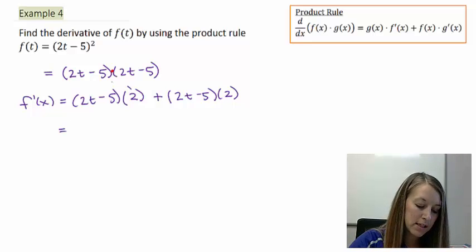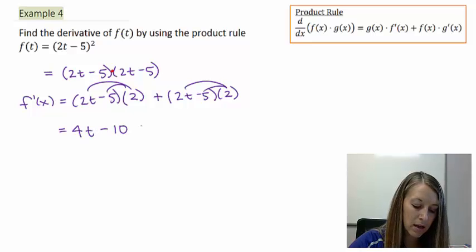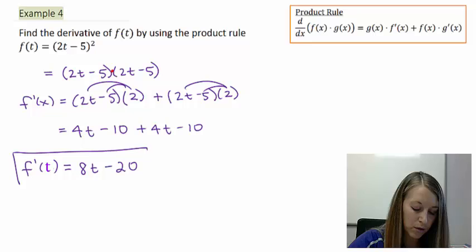So to simplify this, let me distribute my 2's through. That gives me 4t minus 10 in both places. So combining that, that gives me 8t minus 20. So we have taken the derivative of this example here.